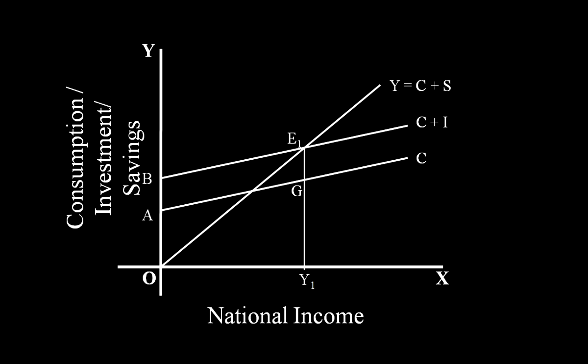Hence, at E1, not only does Aggregate Supply equal Aggregate Demand, but also planned savings equals planned investment. No other national income level will bring about such equalities.